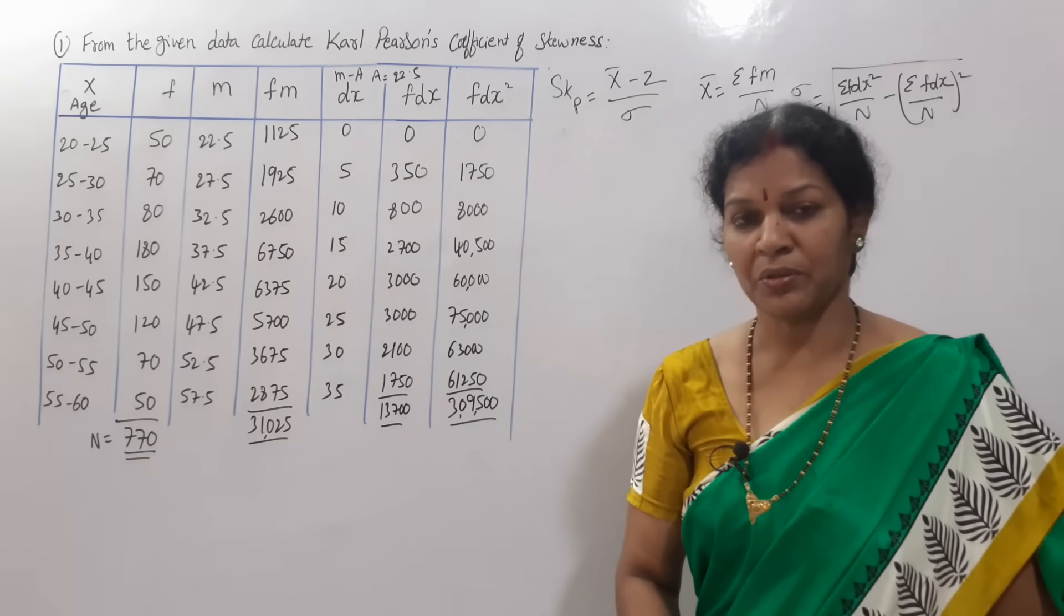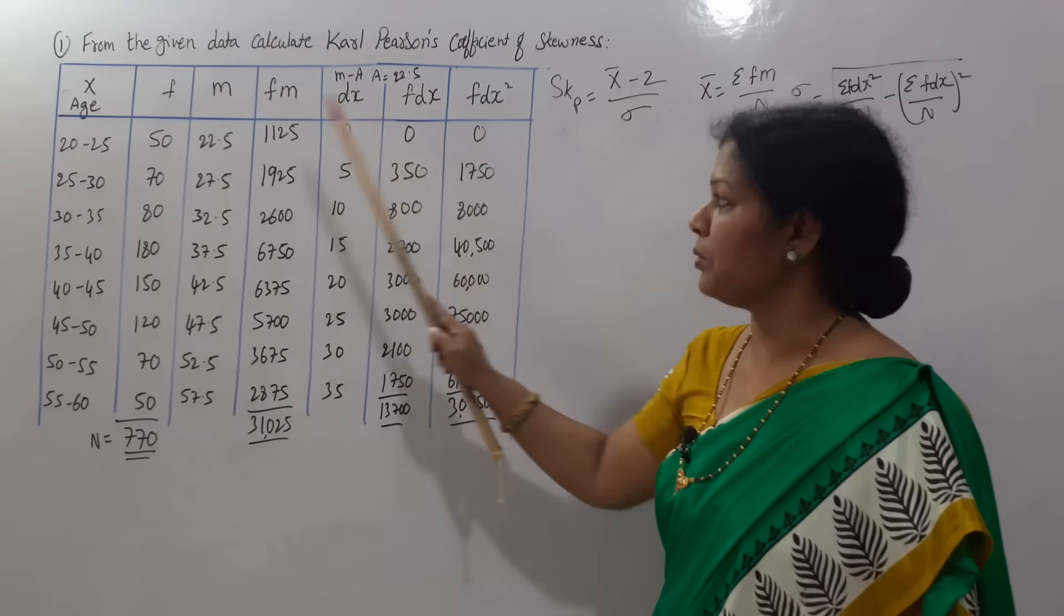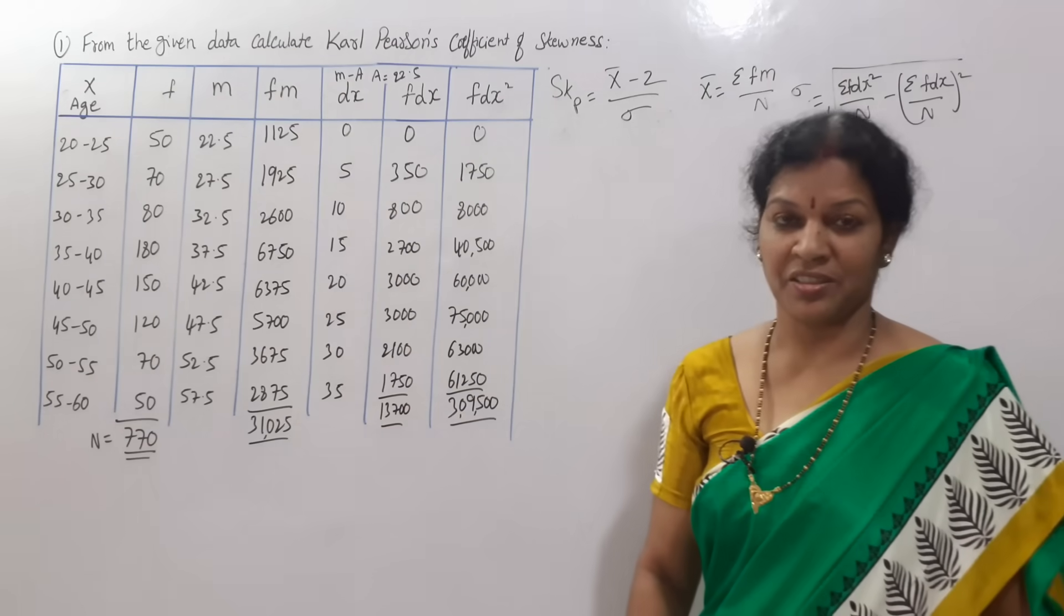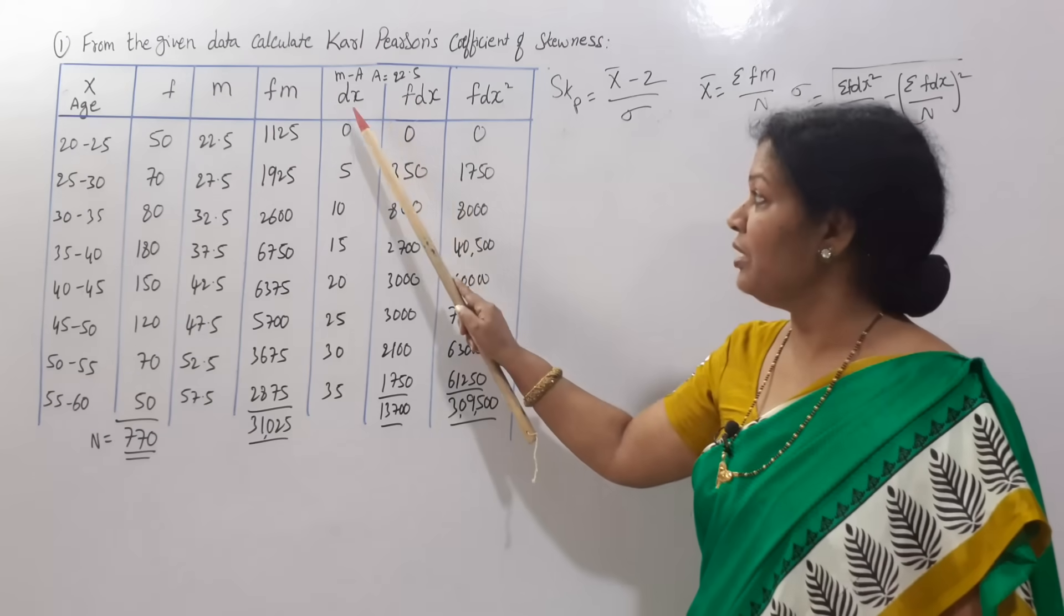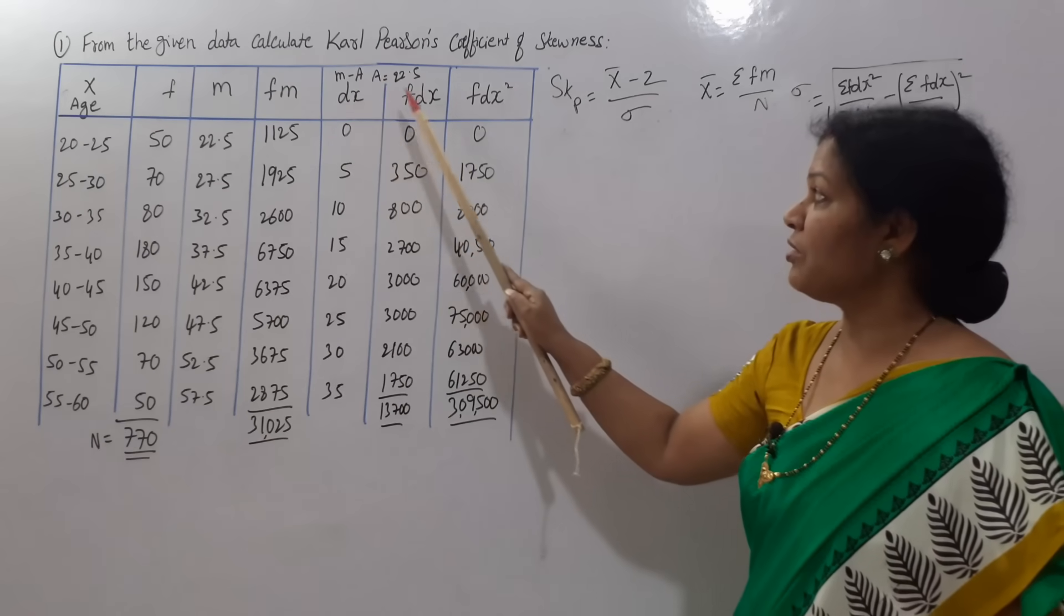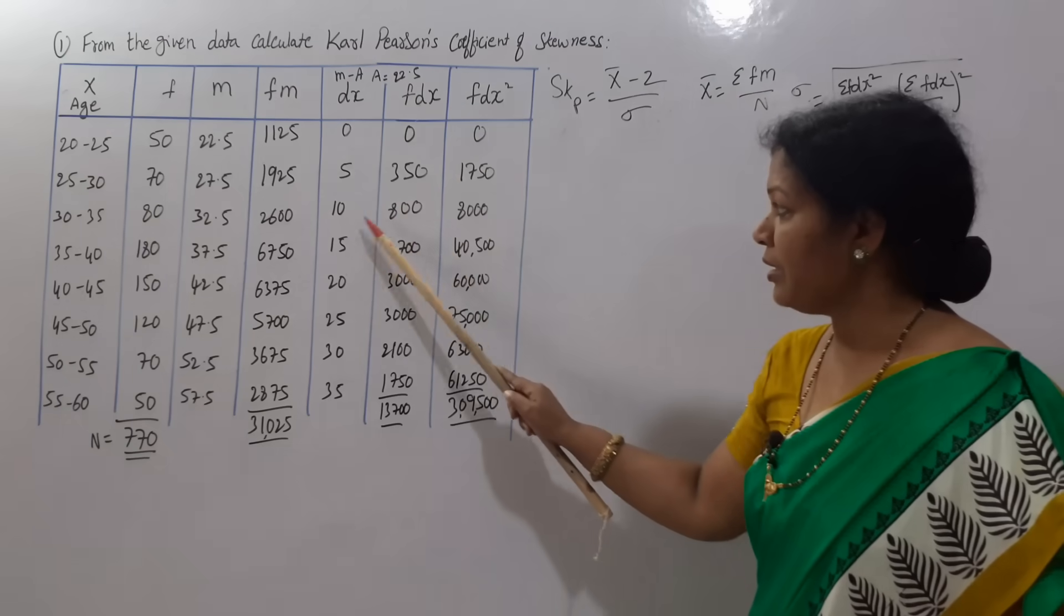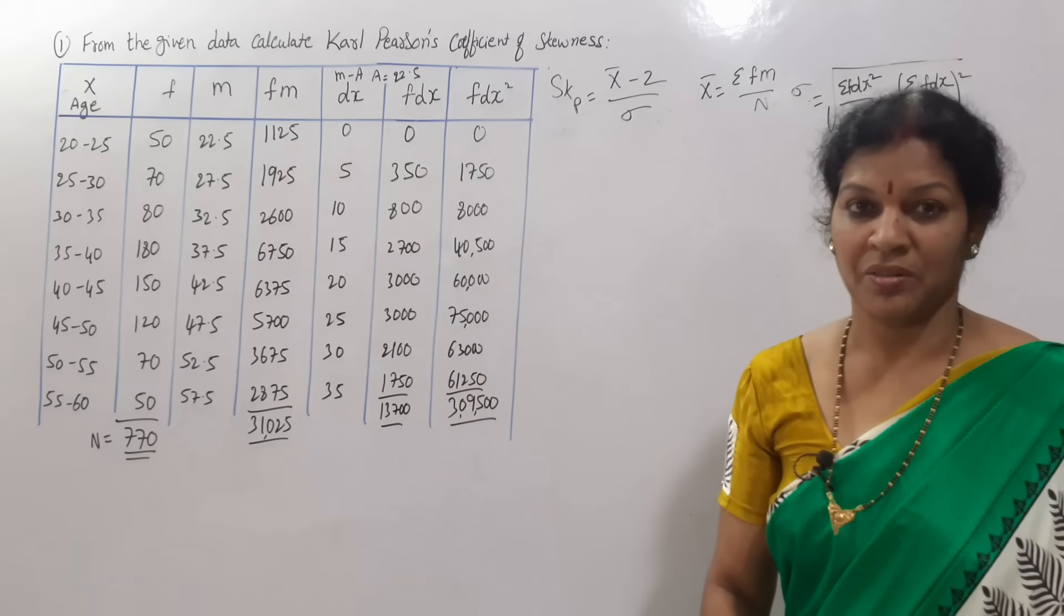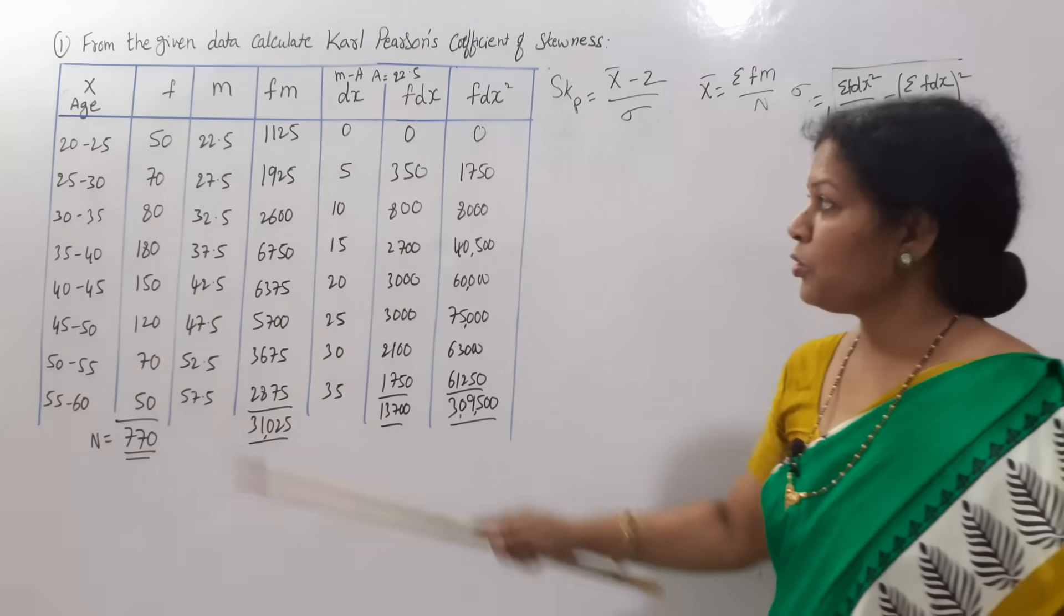Once you get d x value, then go for f d x, frequency into d x. 50 into 0 equals 0, 70 into 5 equals 350, 80 into 10 equals 800. Then f d x square: d x into f d x. So 5 into 350 equals 1750, 10 into 800 equals 8000.